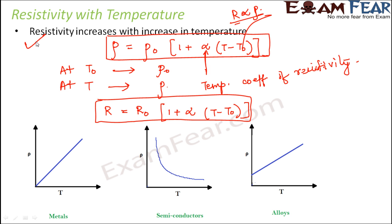Looking at the graphs: for metals, as temperature increases, resistivity also increases. For semiconductors, as temperature increases, resistivity decreases — and not in a linear manner. For alloys, resistivity also increases with temperature, but when temperature is zero, the resistivity is not zero — it has some finite value. It's important to remember these graphs as they are commonly asked in competitive examinations.